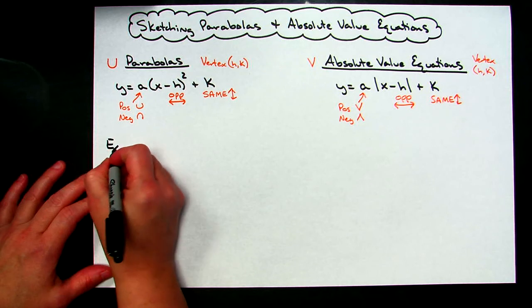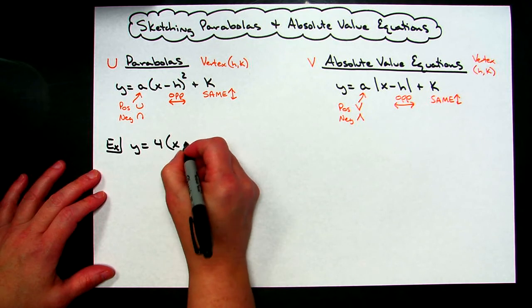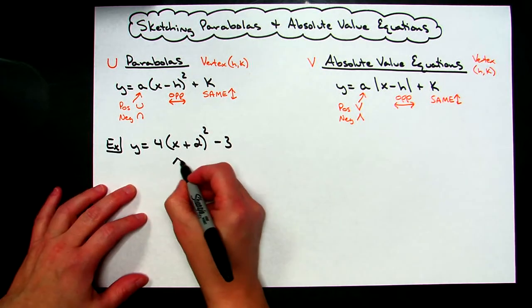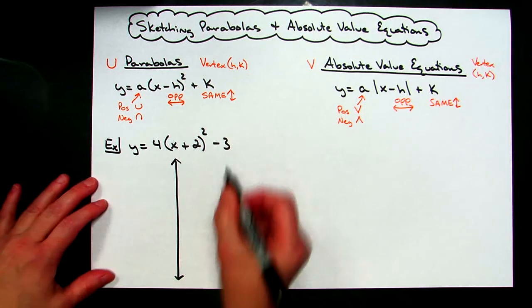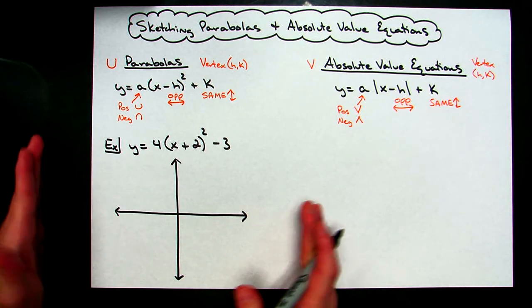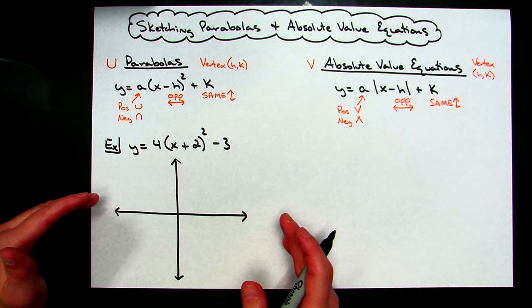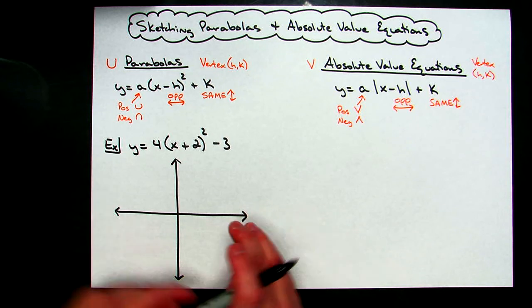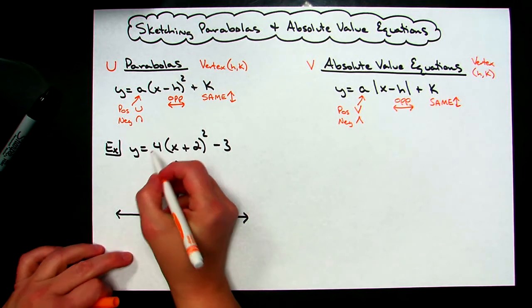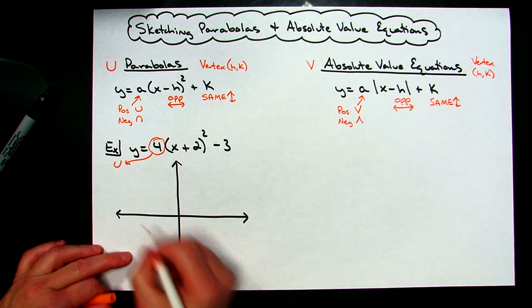For a parabola example, let's take y equals 4 times the quantity (x plus 2) quantity squared minus 3. I know it's a parabola because of the x squared. I'm going to do a really rough sketch — not using graph paper, not precise. The leading coefficient is 4, which is positive, so I know right off the bat it's going to be an upright U.